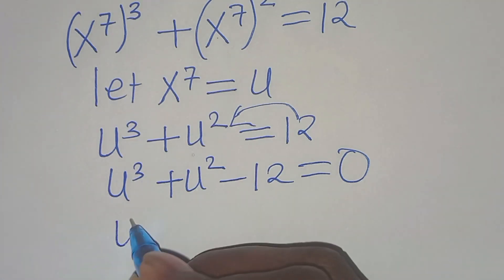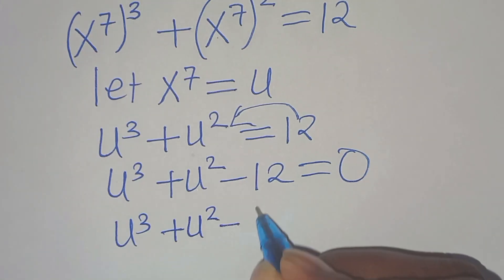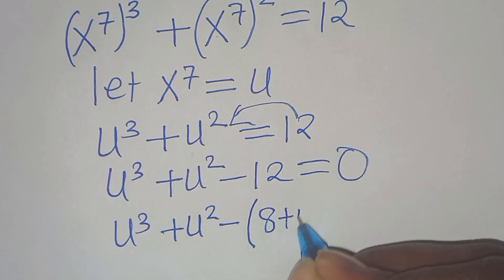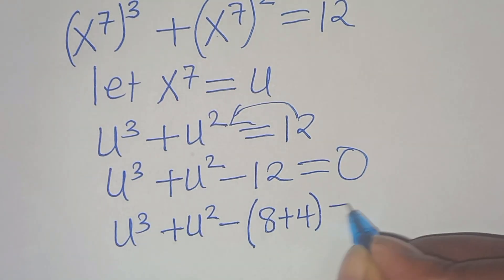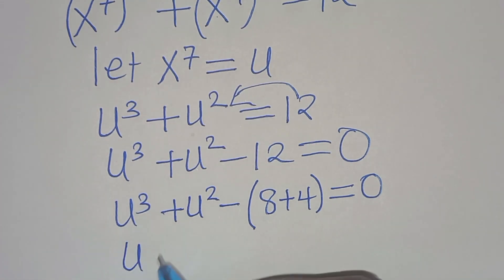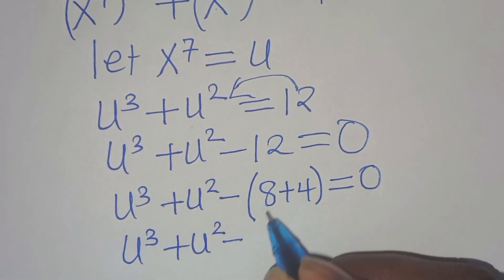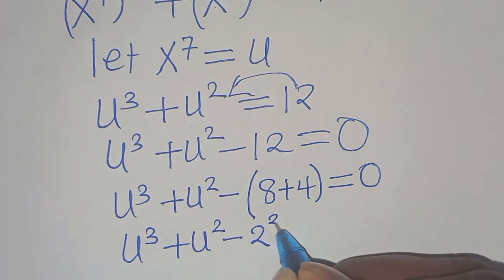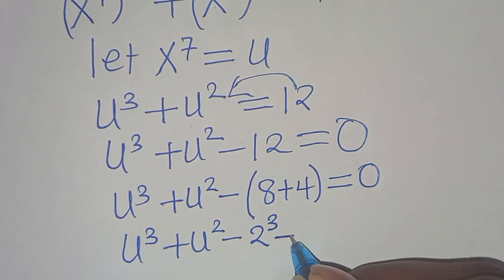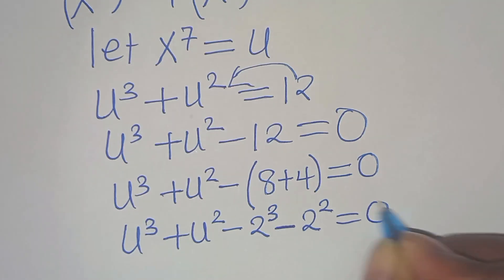We split 12 as 8 plus 4. We write u to the power of 3 plus u to the power of 2 minus 8 minus 4 equals 0, where 8 is expressed as 2 to the power of 3 and 4 is expressed as 2 to the power of 2. So we have u³ + u² − 2³ − 2² = 0.